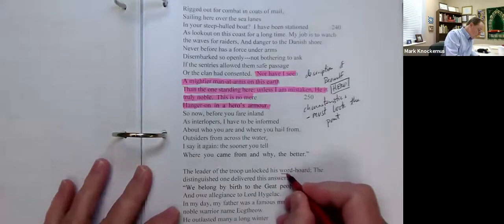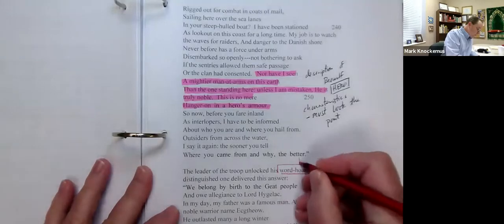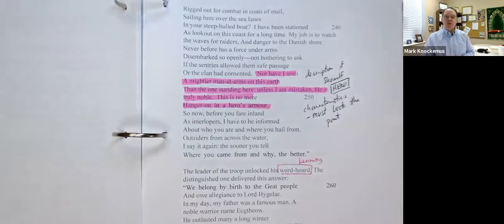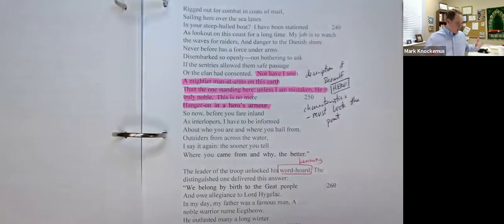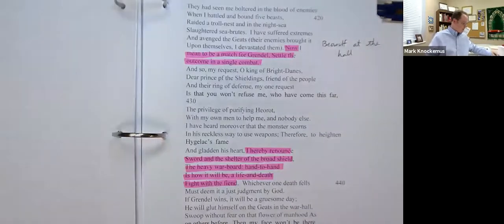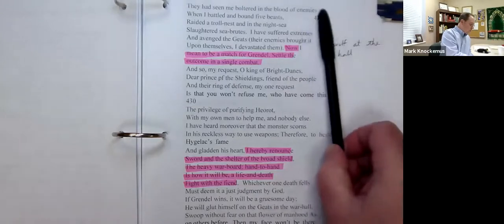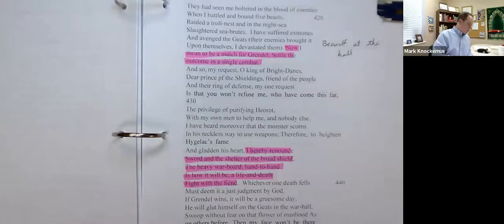Did anybody catch this? What's this, guys? It's another what? Kenning. The leader of the troop unlocked his word horde. What could a word horde be? His vocabulary. In a literal sense, his mouth. Going through and now he's going to relate what's going on. Why are they here? Who's here? Now, we're jumping forward. Please reference the line numbers here so you can keep up in the discussion.